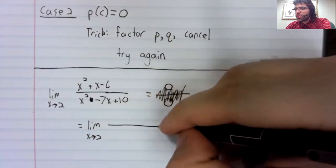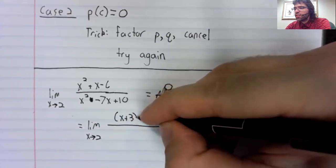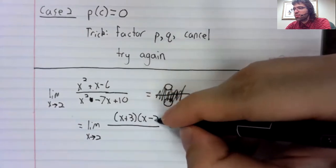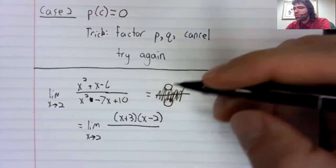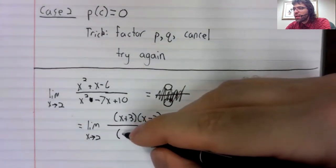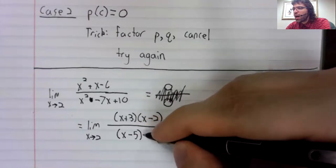So, let's see, x plus three times x minus two and x minus five times x minus two.